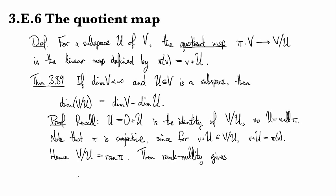it gives that the dimension of v is going to be the dimension of the range of π, plus the dimension of the null space of π, which is u, and so by subtracting dimension u to the other side, we have our result.